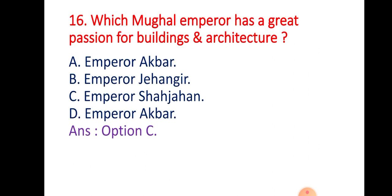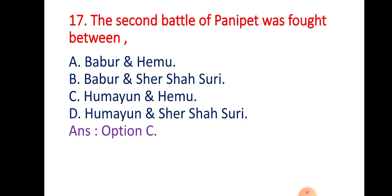Question 16: Which Mughal emperor had a great passion for buildings and architecture? Option A: Emperor Akbar; Option B: Emperor Jahangir; Option C: Emperor Shahjahan; Option D: Emperor Akbar. The right answer is Option C — Emperor Shahjahan.